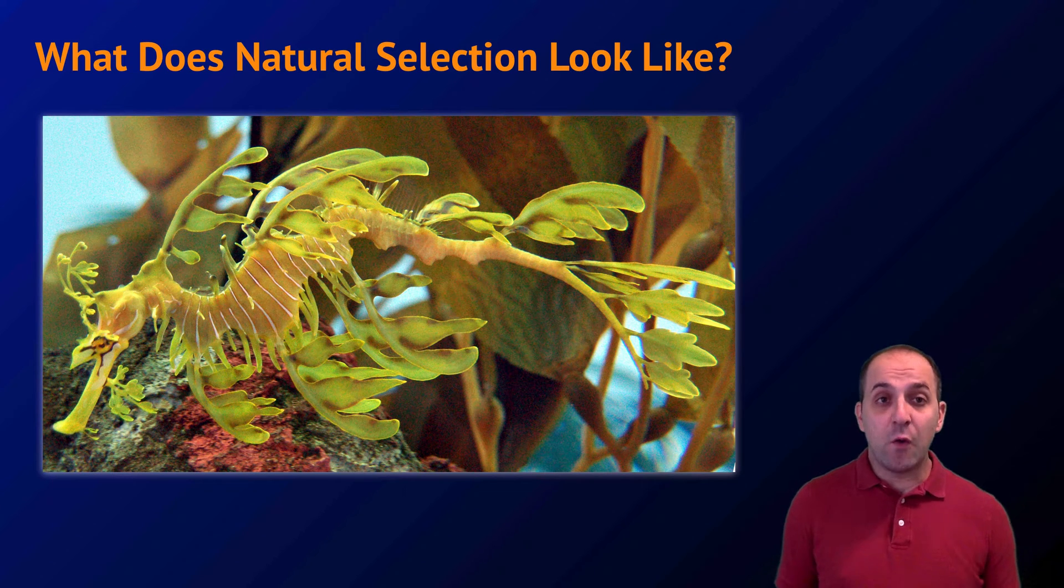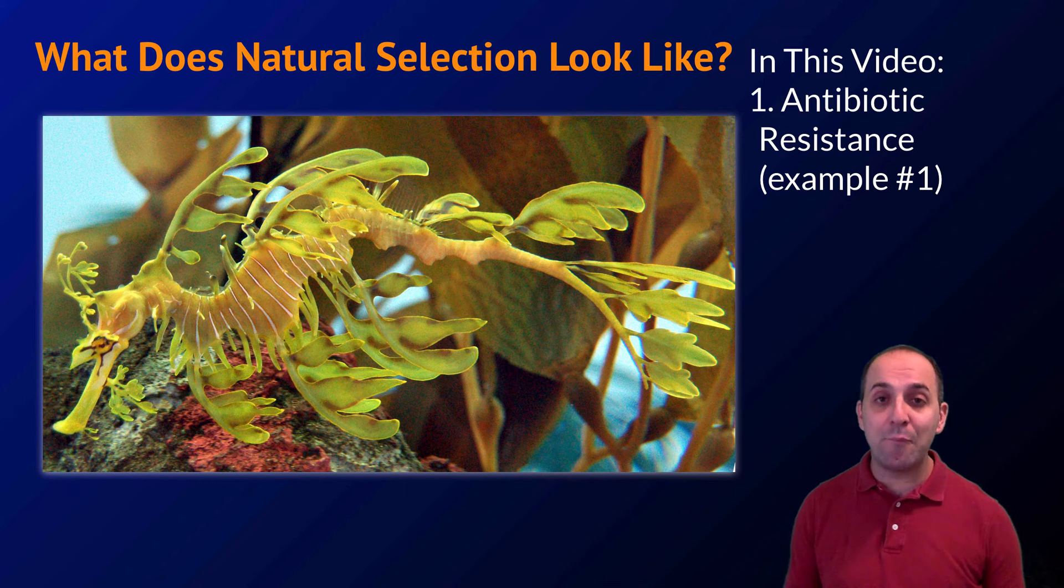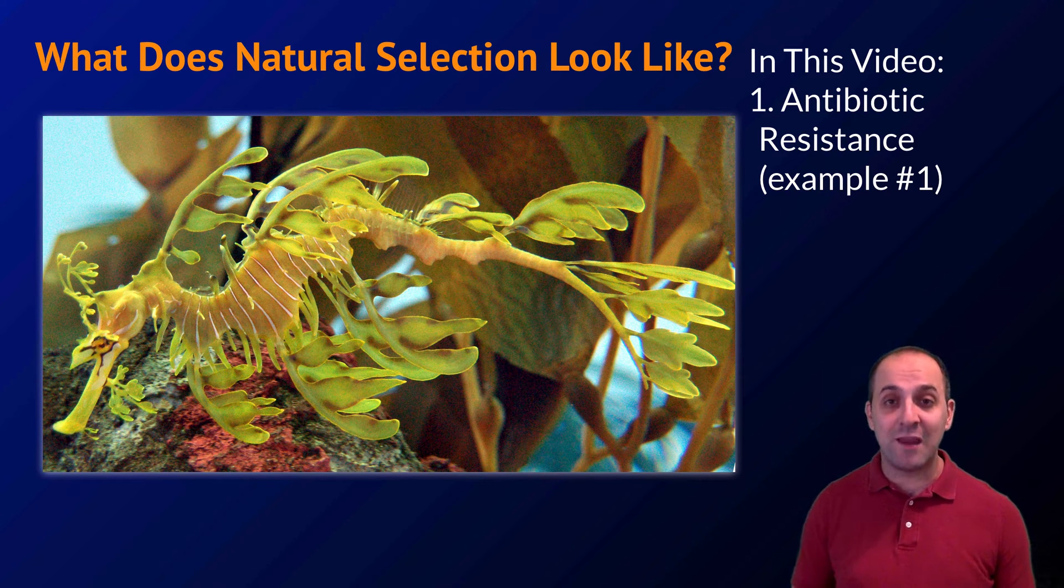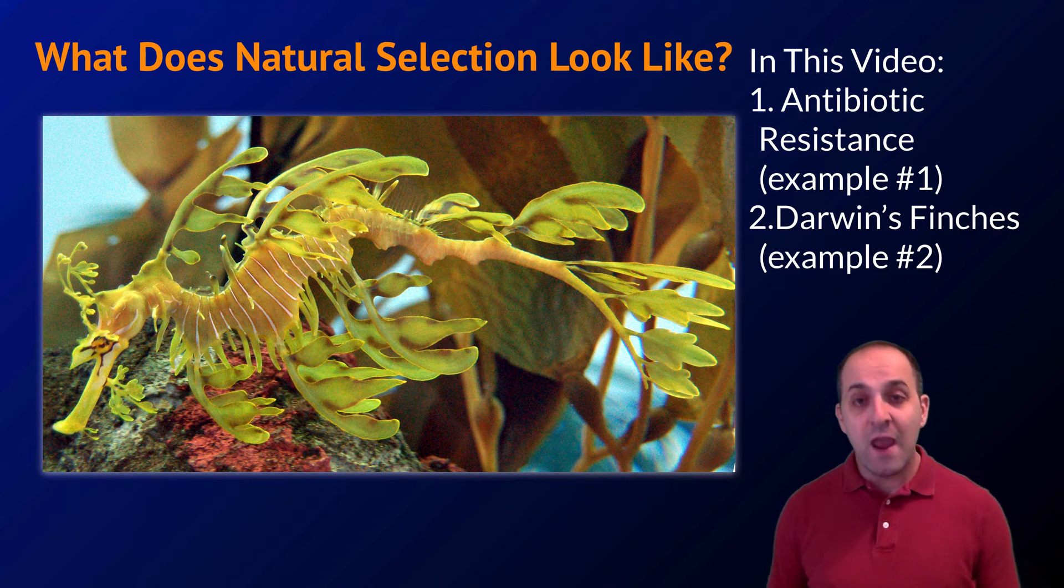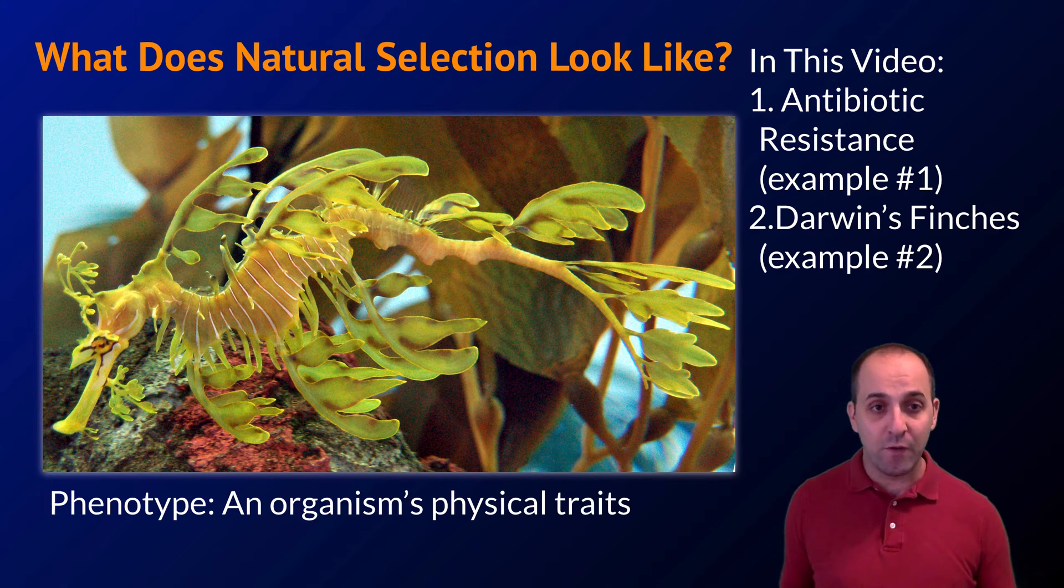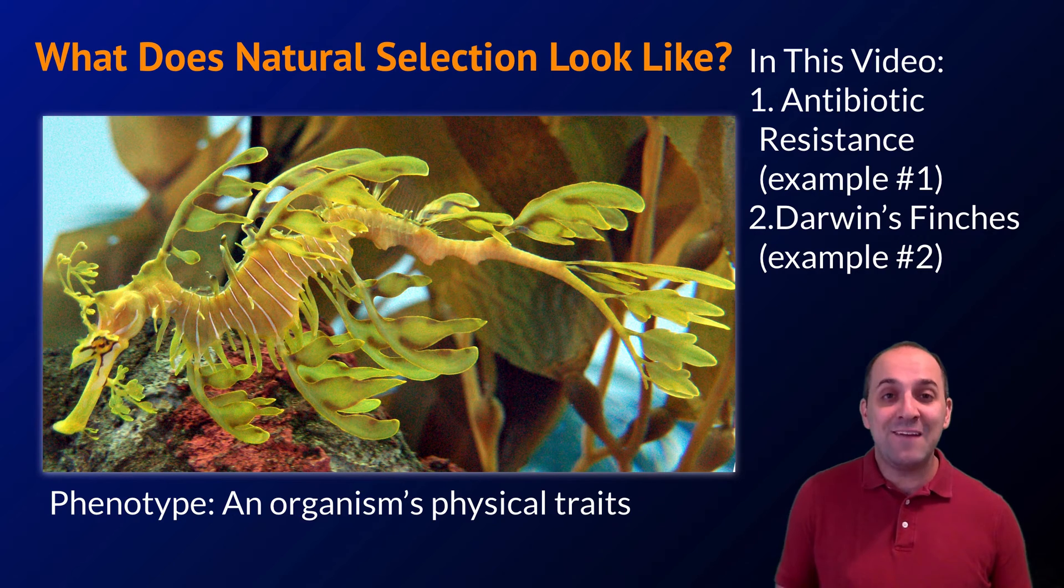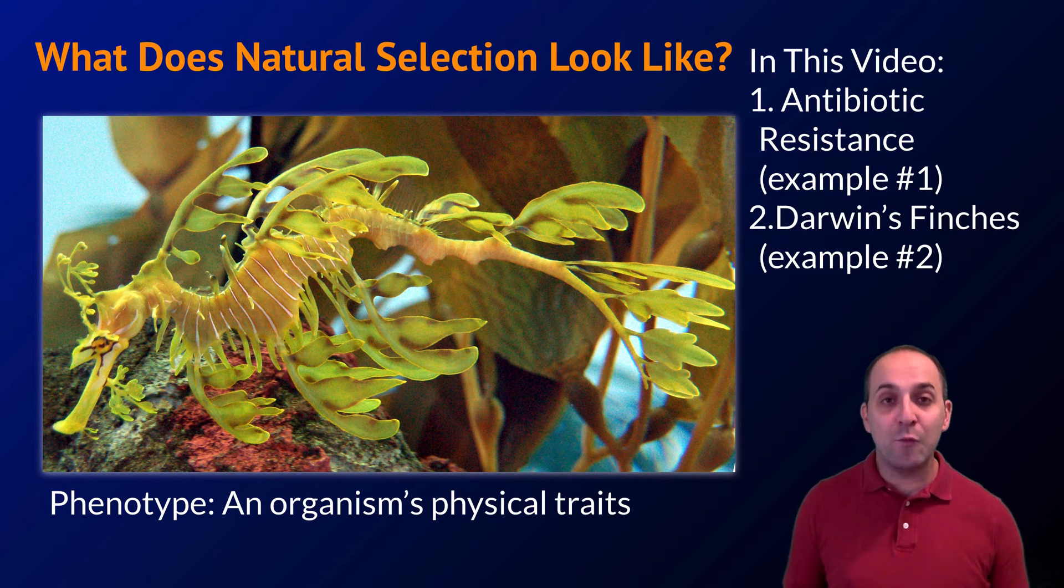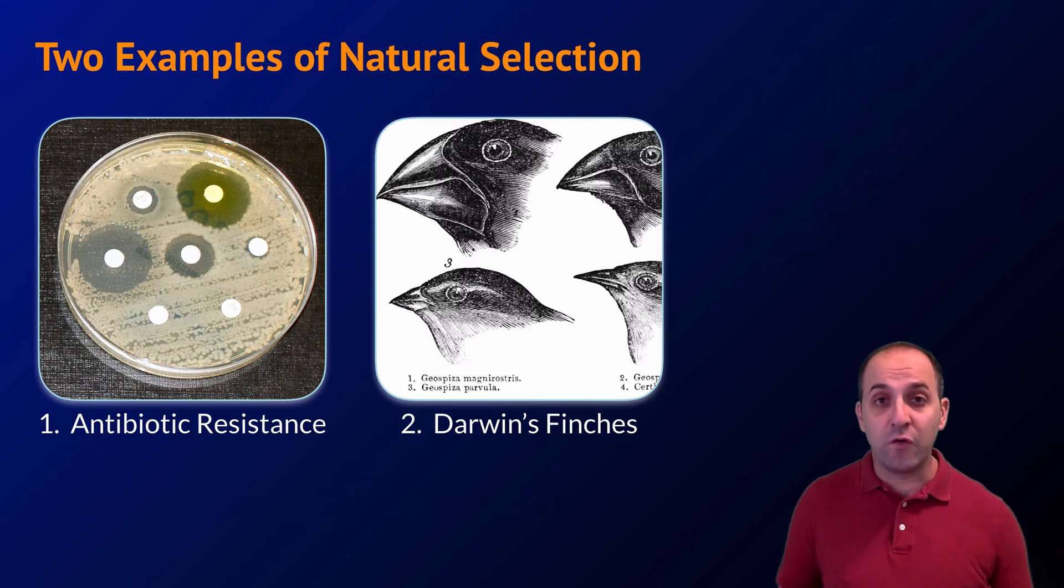The major question that we're going to answer in this video is what does natural selection look like? We'll look at two different examples. Our first example is going to be antibiotic resistance in bacteria, and our second example is going to look at a group of birds known as Darwin's finches. In all cases, we're going to look at natural selection acting on the phenotype of an organism. This word refers to an organism's physical traits. For instance, this leafy sea dragon has a phenotype that makes it look like the seaweed that it lives in to help it camouflage with its surroundings.